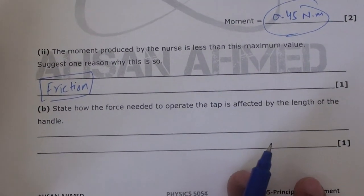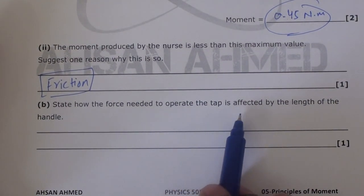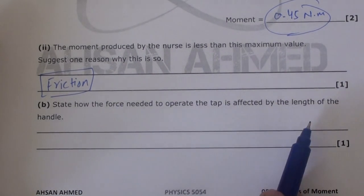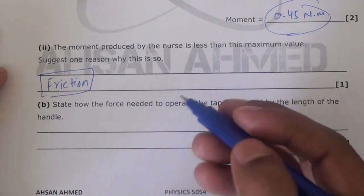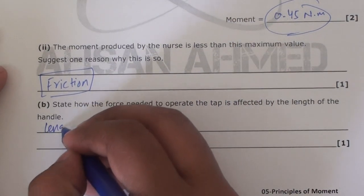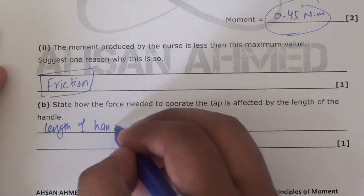Now the next question: state how the force needed to operate the tap is affected by the length of the handle. Simple point is that length of the handle is actually the perpendicular distance, right? So I'm going to write that length of handle is perpendicular distance.